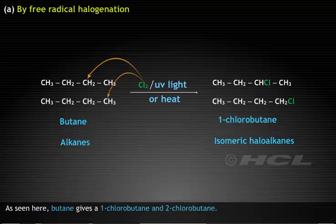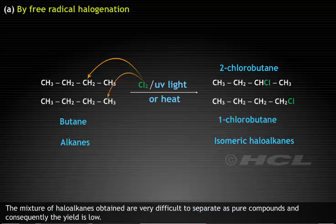Butane gives 1-chlorobutane and 2-chlorobutane. The mixture of haloalkanes obtained are very difficult to separate as pure compounds and consequently the yield is low.